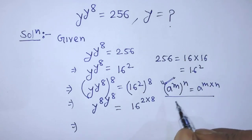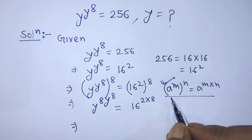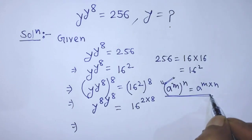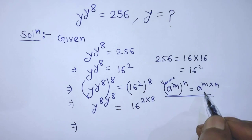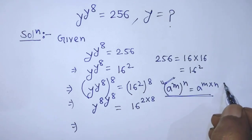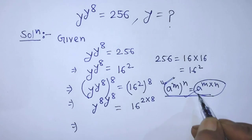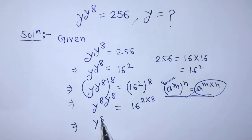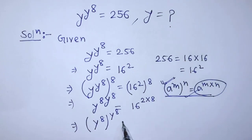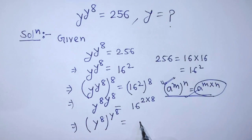On the left hand side of this equation, again we have to apply the formula: a to the power m, whole to the power n, is equal to a to the power m times n. According to this formula, we can write on the left hand side: y to the power 8, whole to the power y to the power 8, is equal to, on the right hand side, 16 to the power 16.